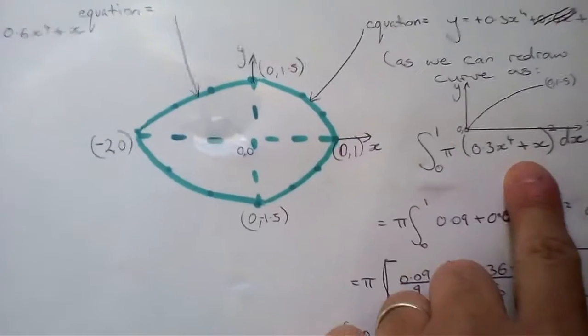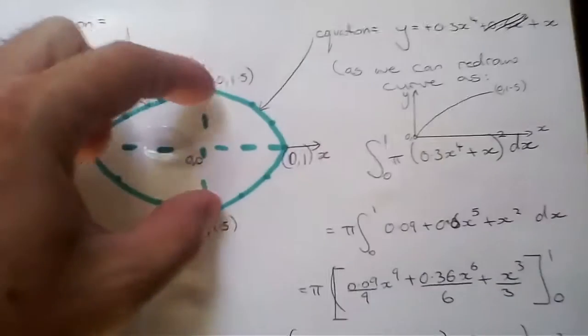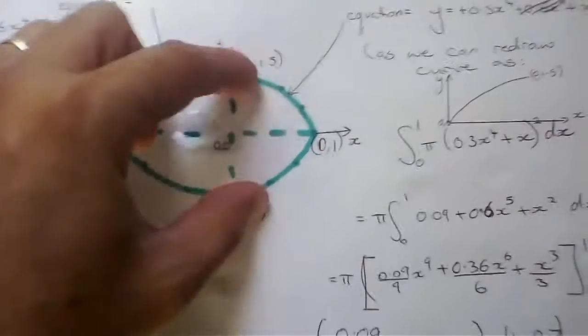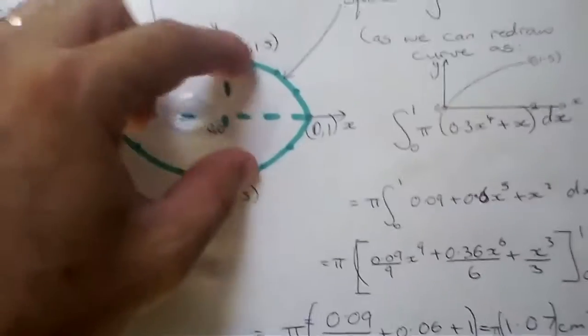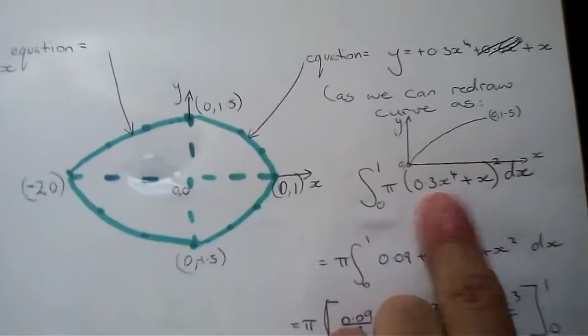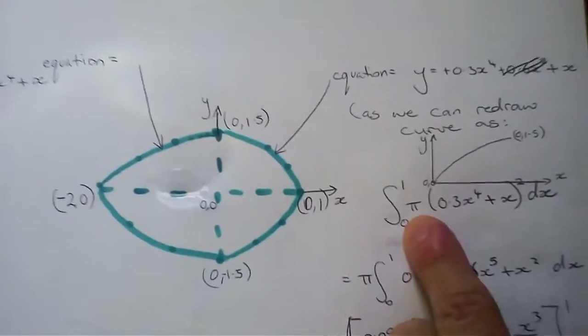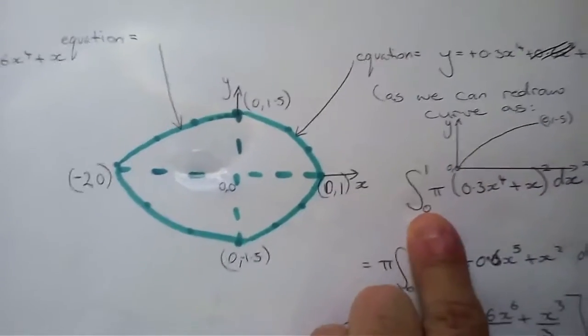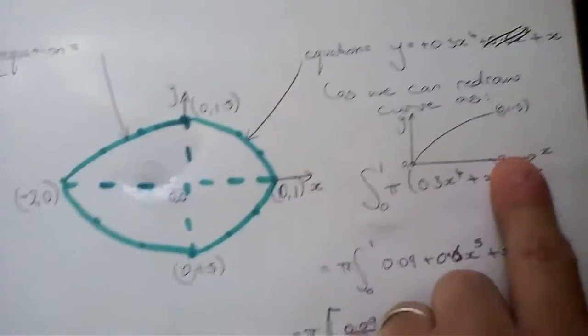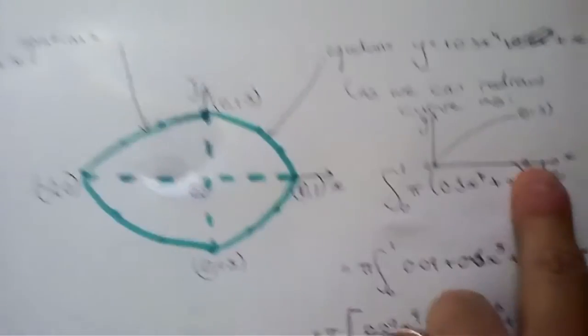What we're actually doing is we're taking little slices along here, and each slice is the area of a circle, which is πy². And so that's what we've got here - we've got y term squared times π, and then we're also integrating. We're taking the integral all the way from 0 to 1.5 across x.